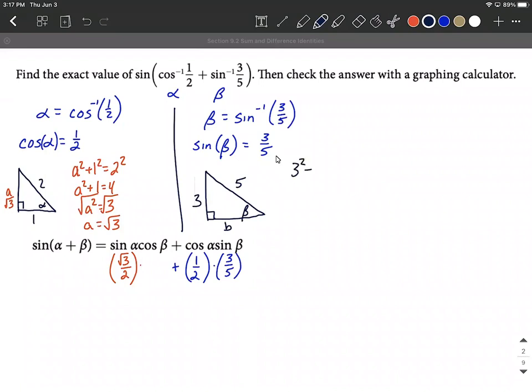So Pythagorean theorem to help us out, we can say three squared plus b squared, as I labeled it b, is equal to five squared. So nine plus b squared equals 25. Move that nine to the other side by subtracting it. So we'll get b squared equals 16. To finish this up, we'll apply a square root to both sides. And we'll get b is going to equal four. So we need to fill in cosine of beta. So cosine of beta, again, referring to this triangle that involves beta, then it's going to be the adjacent four over the hypotenuse. So we're going to replace this with four over five.